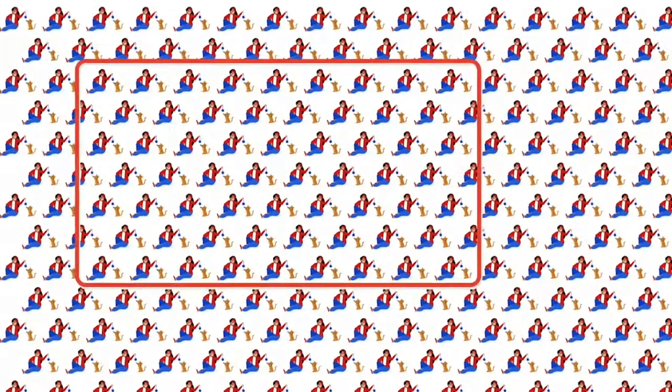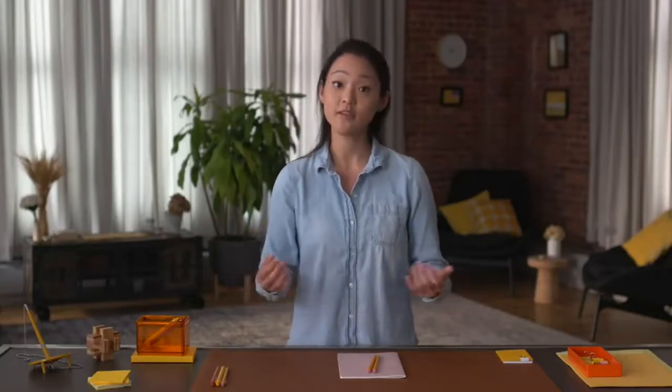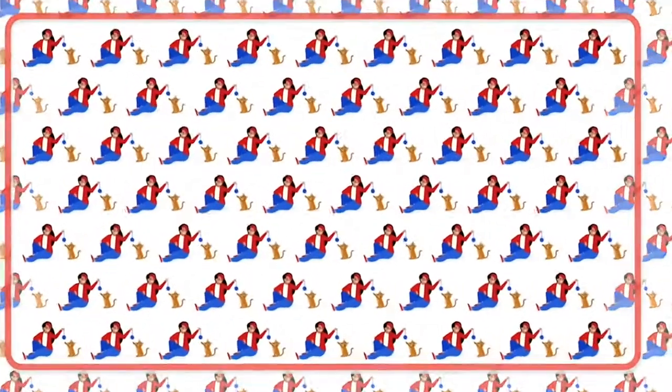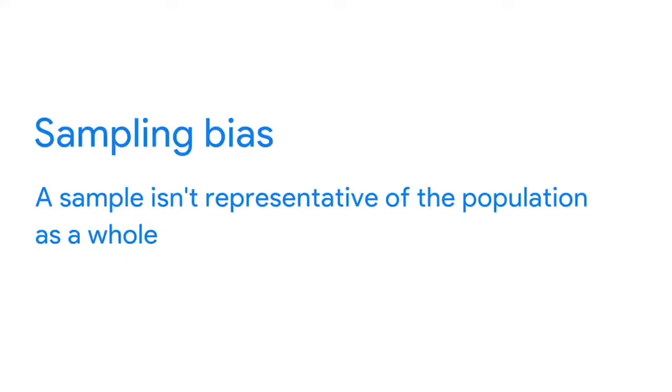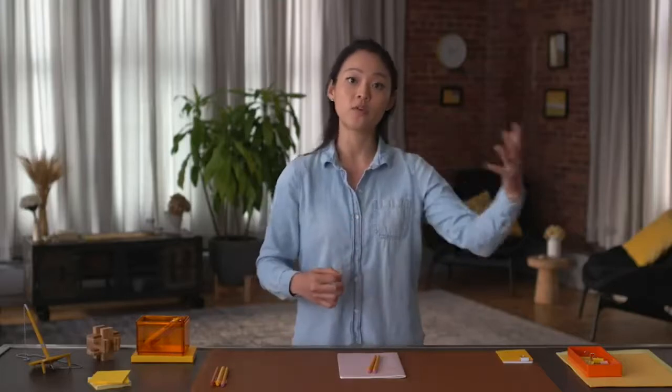That's where sample size comes in. When you use a sample, you use a part of a population that's representative of the population. The goal is to get enough information from a small group to make predictions or conclusions about the whole population. The sample size helps ensure the degree to which you can be confident that your conclusions accurately represent the population. However, when you only use a small sample, it can lead to uncertainty, and this leads to sampling bias — when a sample isn't representative of the population as a whole, meaning some members are being overrepresented or underrepresented.